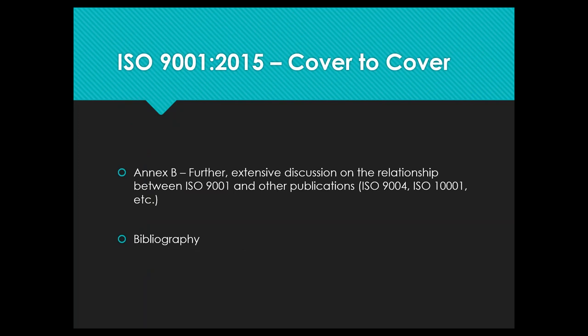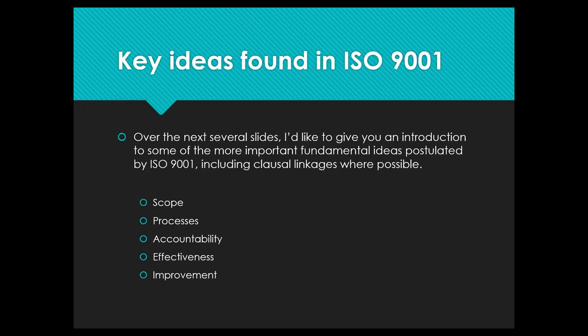The standard concludes with Annex B, an extensive discussion on the relationship between ISO 9001 and several other ISO publications, followed by a bibliography. For those new to ISO 9001, it helps to boil the standard down to five key ideas: scope, processes, accountability, effectiveness, and improvement.